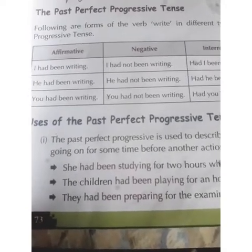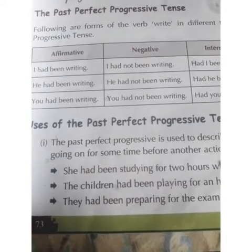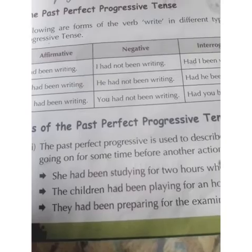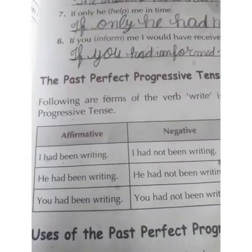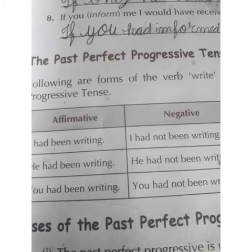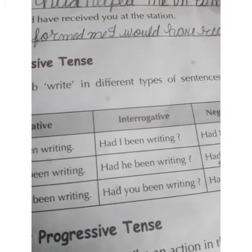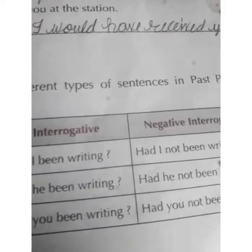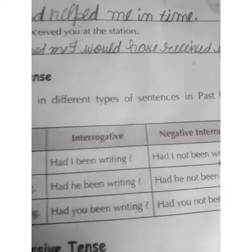In this tense we will use had been plus verb first form plus ing. For example, in an affirmative sentence: I had been writing. In negative: I had not been writing. In interrogative: had I been writing? And negative interrogative: had I not been writing?